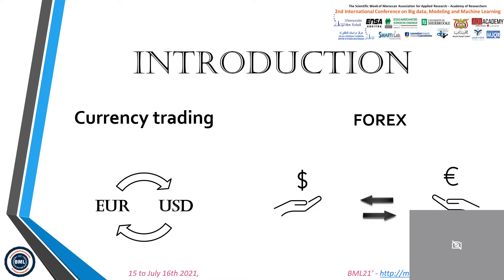To understand what the forex is, first we should understand what currency trading is. In general, trading is exchanging one item for another one. That means currency trading is the action of exchanging one type of currency, for example the dollar, for another one, for example the euro. In the forex, which is a short form of foreign exchange market, investors try to make money by trading — they can buy a certain amount of currency and hold it until the exchange rate moves, then sell it. This action is not easy as it looks like; due to the forced fluctuation of the market, traders find it so hard to know if prices will go up or go down.